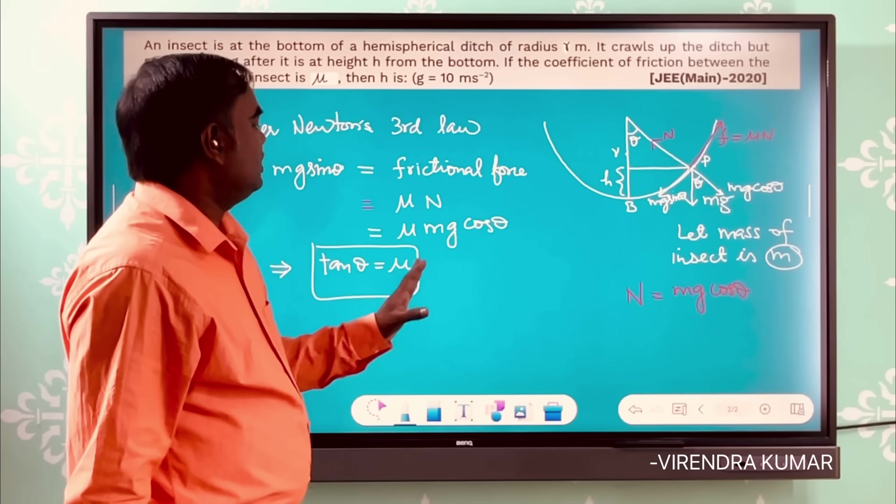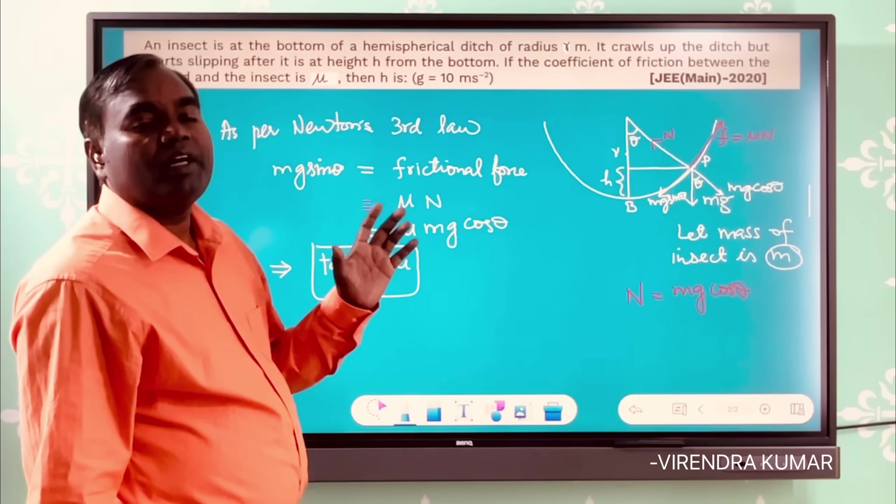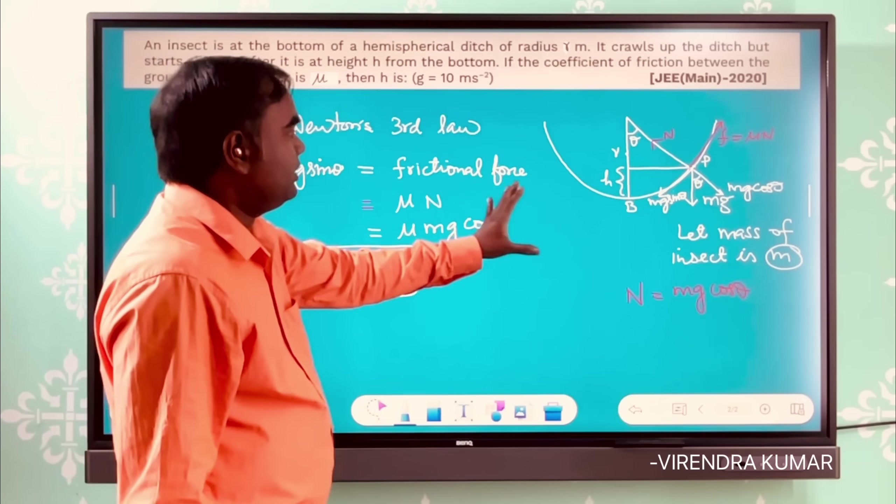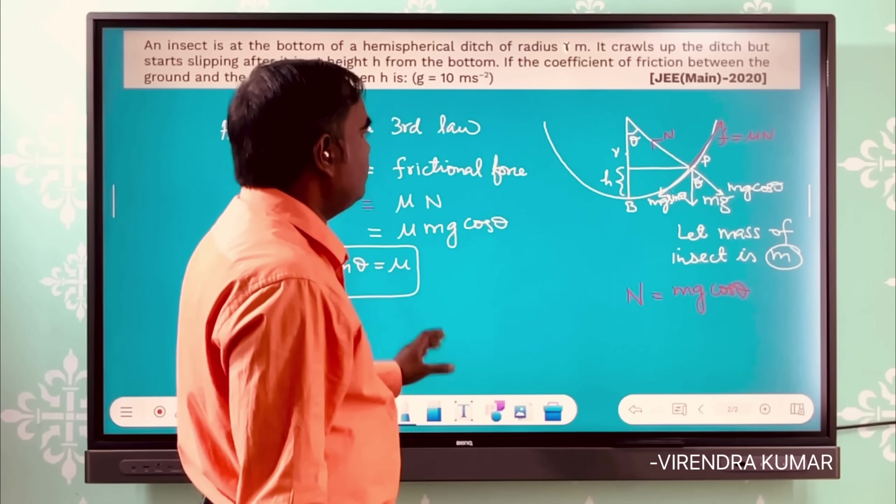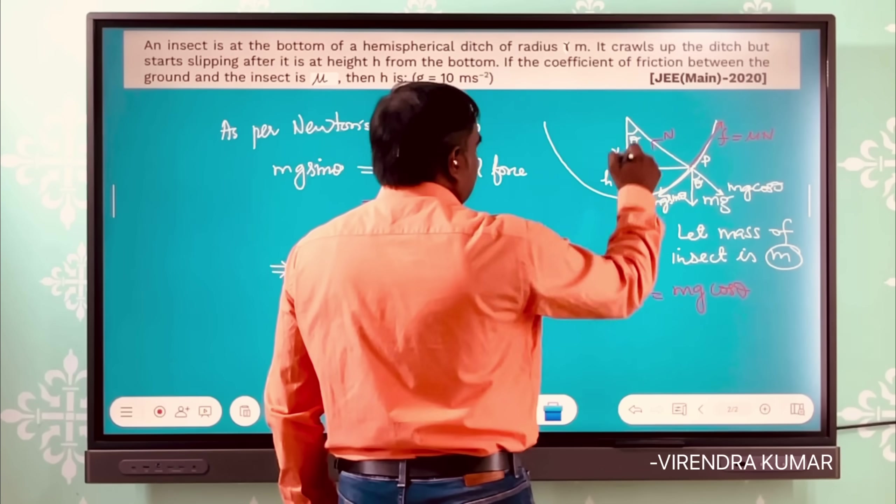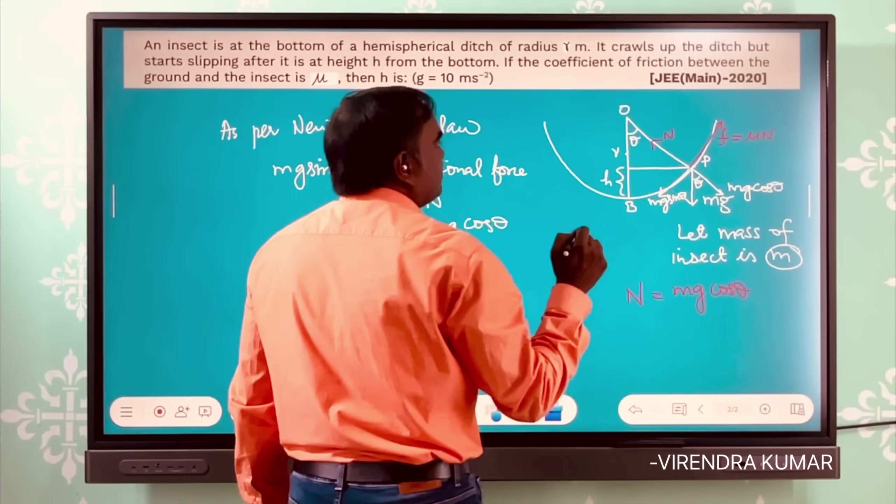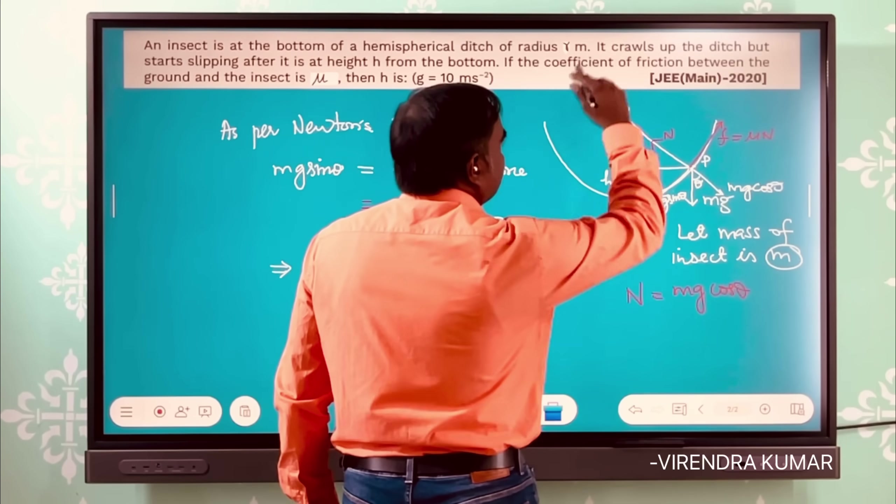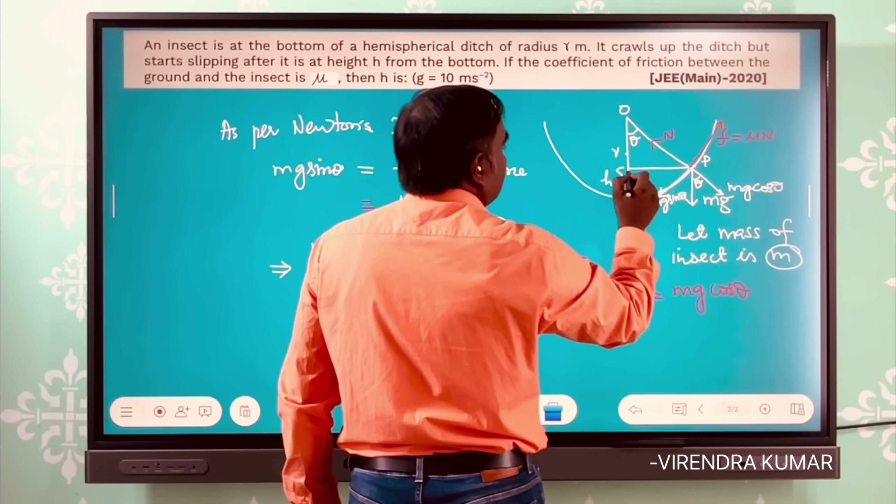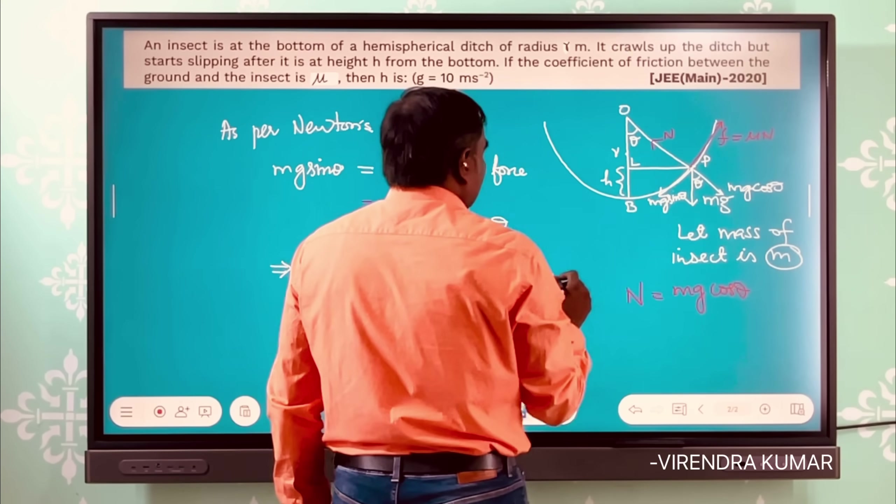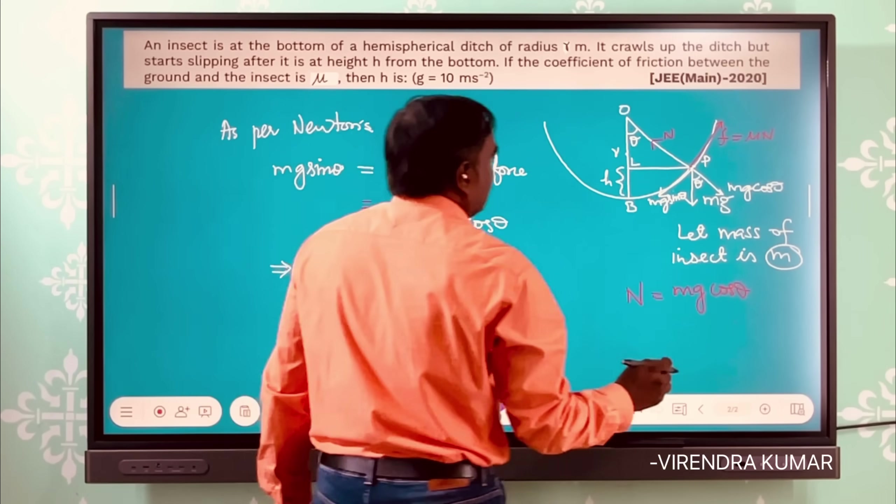So from this we get the expression tan θ equals μ. Now you have to find the height h, so tan θ equals μ. And this is the center of the hemisphere or sphere, r is the radius, and let this is the L point. So let us consider the triangle OLP.